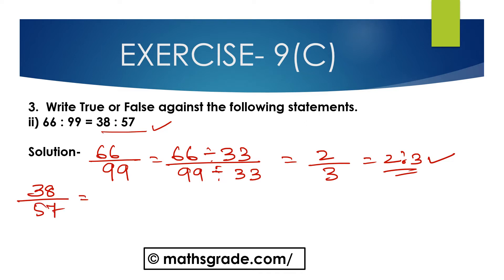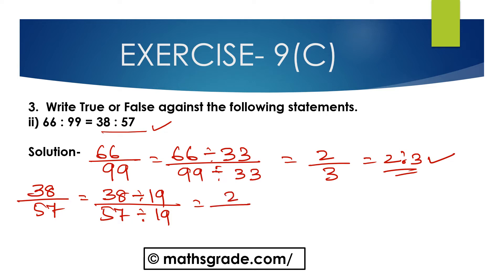Now, 38 is to 57 — that is 38 divided by 57. Between 38 and 57, 19 is the common factor. So divide the antecedent 38 by 19 and the consequent 57 by 19. That gives 2 is to 3. Both ratios are equal — 2 is to 3. So the statement 66 is to 99 equal to 38 is to 57 is TRUE.